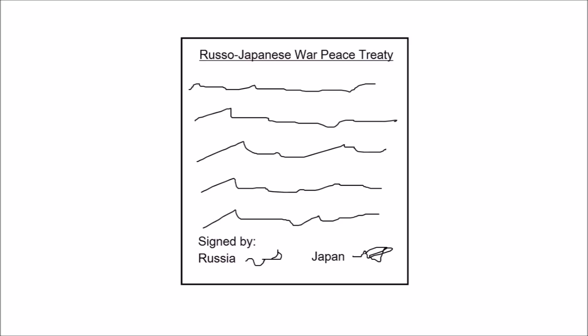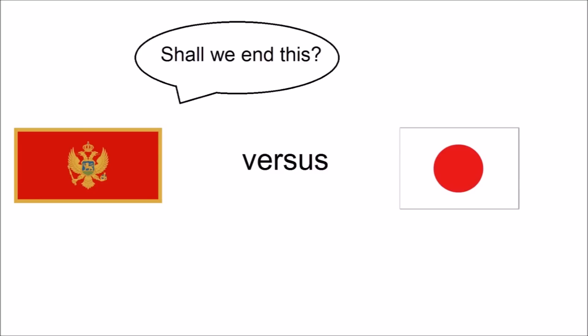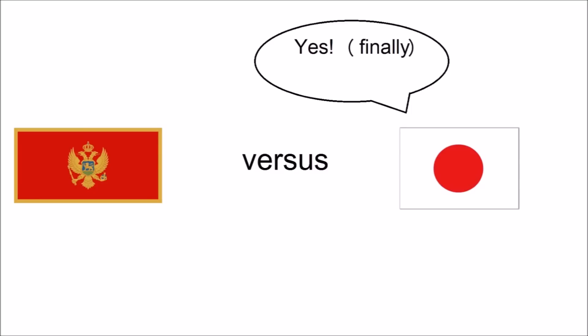War number two: Japan versus Montenegro. Montenegro aided Russia in the 1904 Russo-Japanese War. However, when they wrote the peace treaty, Montenegro wasn't included and therefore were still technically at war with Japan. This went on for not 10, not 50, but 101 years before Japan recognised Montenegro independence, meaning the conflict officially ended in 2006.